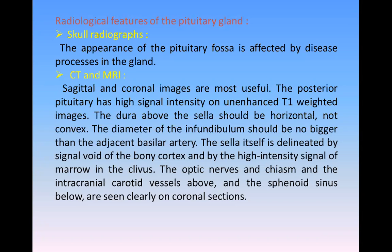Radiological features of the pituitary gland on MRI: the posterior pituitary shows high signal on T1. The dura above the sella should be horizontal — this is an important point. It should not be convex; sometimes pathology or enlargement of the pituitary gland makes it convex. The diameter of the infundibulum should be no bigger than the adjacent basilar artery — also an important point. The sella itself is delineated by the signal void of the bony cortex and by high intensity signal of the marrow. The optic nerves and chiasm and the intracranial carotid vessels above, and the sphenoid sinus below, are also clearly seen on coronal sections.